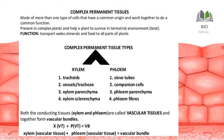Now complex permanent tissue — xylem and phloem. Complex tissue is made up of more than one type of cell. It is present in complex plants and helps plants survive in the terrestrial environment. The function of complex tissue is the transport of water, minerals, and food to all parts of the plant. Complex tissue is of two kinds: xylem and phloem.